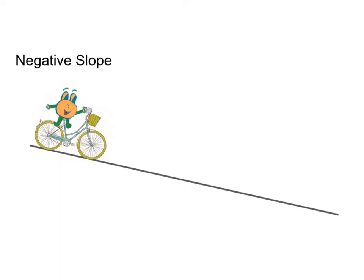And again, when you read it from left to right, you would call this a negative slope. When we were working with graphs, we would call this a decreasing rate.